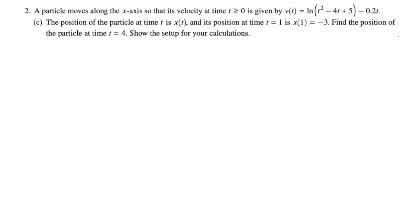All right, part C, the position of the particle at time t is x of t, and its position at time t equals 1 is x of 1, which is negative 3. Find the position of the particle at time t equals 4. Show the setup for your calculation. So this is actually my favorite thing to do with the fundamental theorem. We can figure out where something is by saying where it was plus the displacement. So the position at 4 is going to be the position at 1 plus the displacement from 1 to 4. So plus just the integral from 1 to 4 of the velocity.